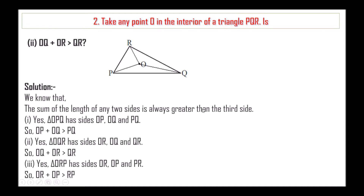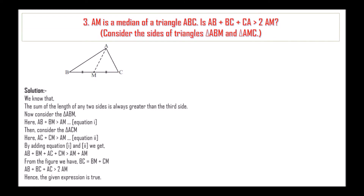We know that the sum of the length of any two sides is always greater than the third side. Triangle OPQ has sides OP, OQ and PQ, so OP plus OQ is greater than PQ. Triangle OQR has sides OR, OQ and QR, so OQ plus OR is greater than QR. Triangle ORP has sides OR, OP and PR, so OR plus OP is greater than PR.